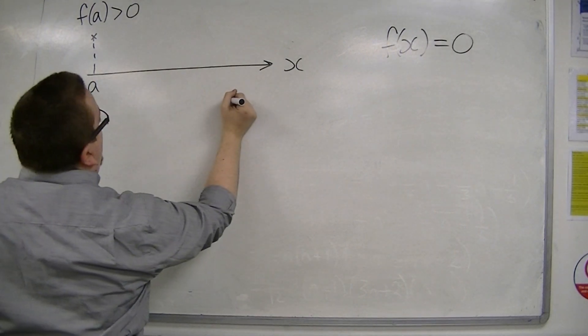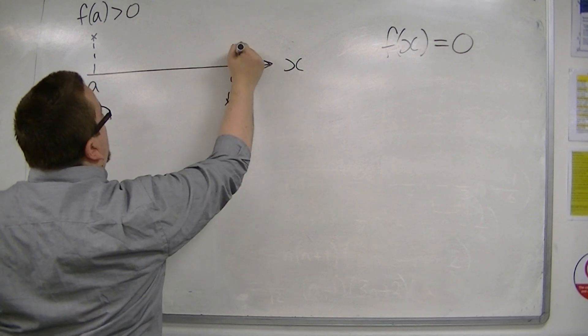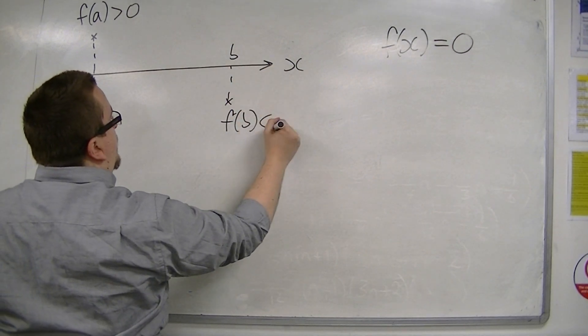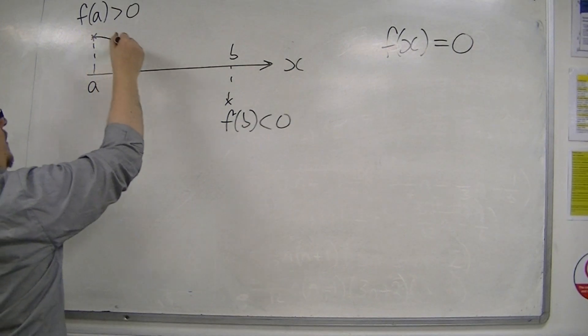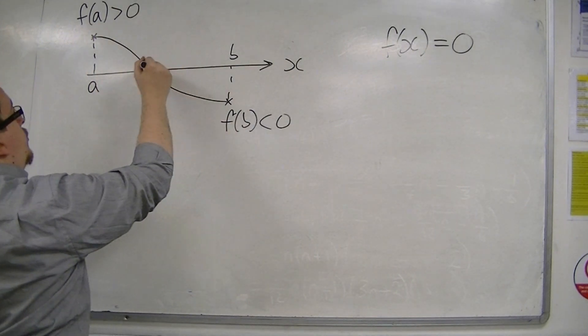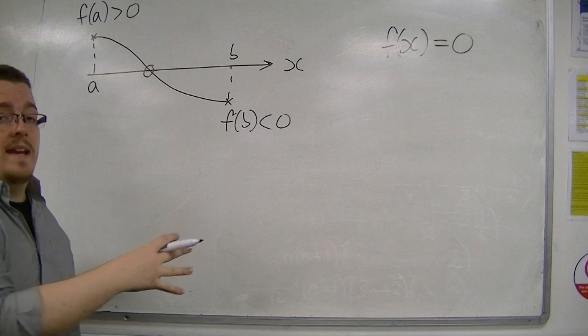And then we substitute in another point, B, and we find that f of B is negative. So, at some point, the curve must cross the x-axis to go from positive to negative.